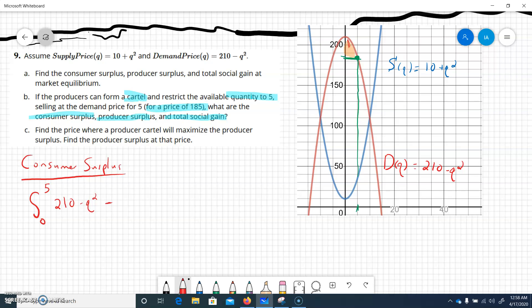We have the top curve which is the demand, which is 210 minus q squared, and then we'll subtract off the bottom of that which is the green line, which is just 185. So everybody, based on the quantity that was set at 5, is paying $185 a piece.